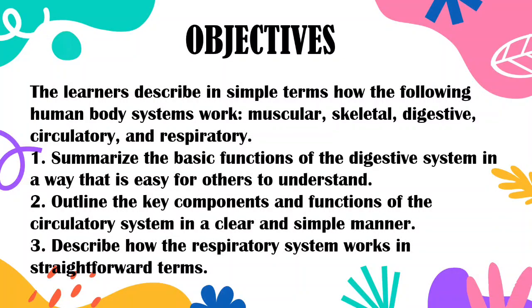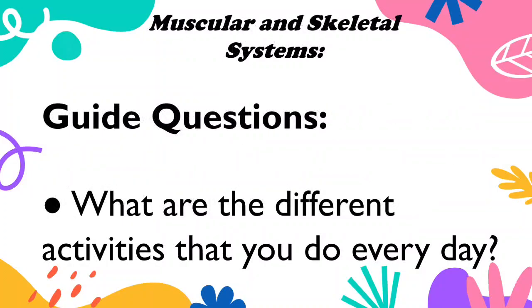Objectives: The learners describe in simple terms how the following human body systems work. Summarize the basic functions of the digestive system in a way that is easy for others to understand. Outline the key components and functions of the circulatory system in a clear and simple manner. Describe how the respiratory system works in straightforward terms.